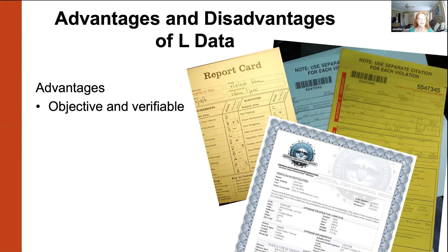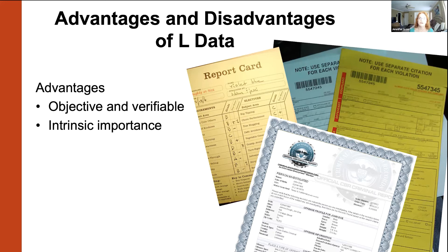What are some advantages of this type of data? One is that it's objective — it's recorded by somebody else, like a government institution or a school — and so it's verifiable. You can be sure that the life outcome data you see is actually the product of the target person's behavior. Also it can be intrinsically important: if you want to know how generous a person is, looking at their volunteer contributions is probably going to be a genuine reflection of how generous they are. So it's intrinsically important and relevant to them psychologically.